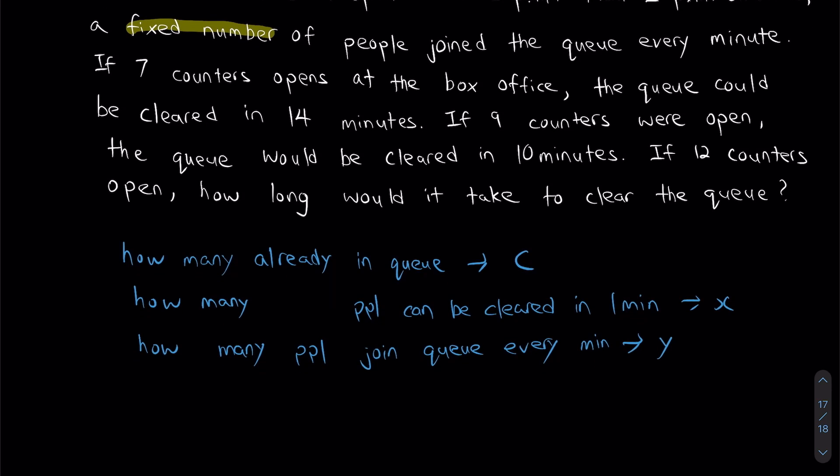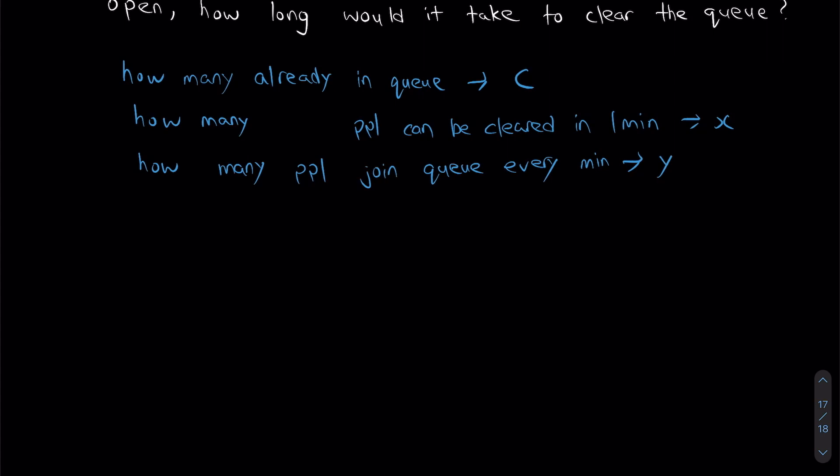So I'm going to use my first scenario now. Seven counters will take 14 minutes to clear everybody. Ready? So what is seven times 14 times X? That's essentially the total number of people joining the queue. That's going to be equals to 14 times Y. So the total number of people that join plus C. Because there were already some people in the queue beforehand.